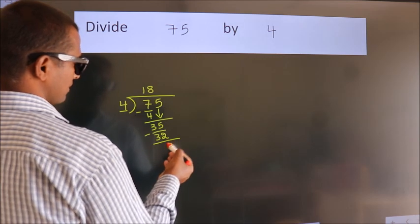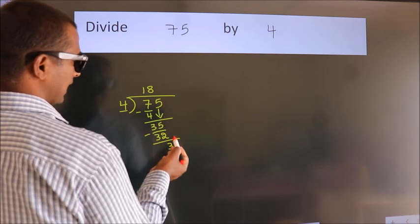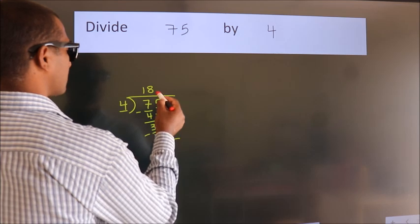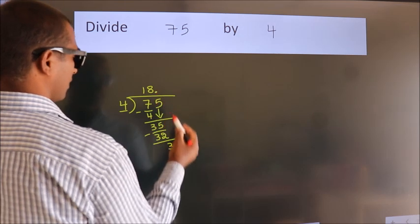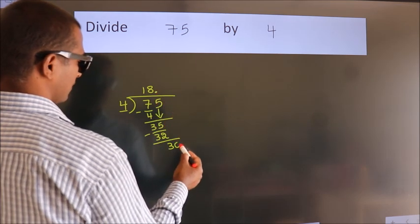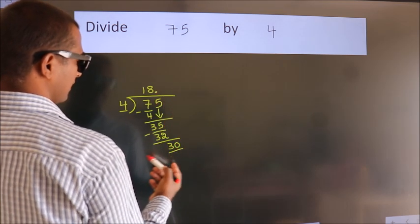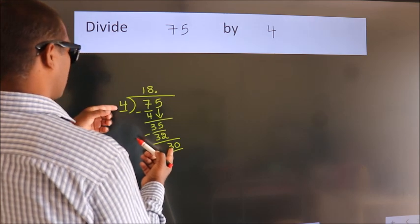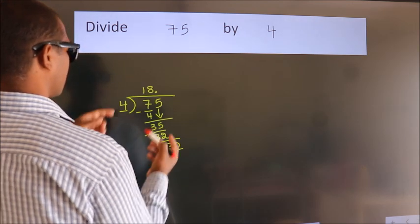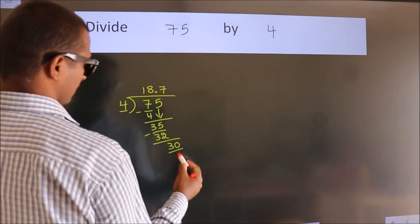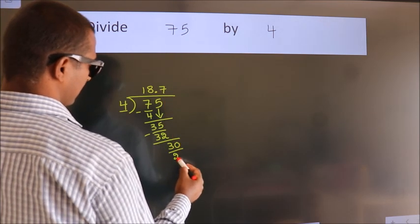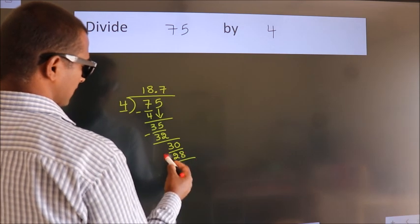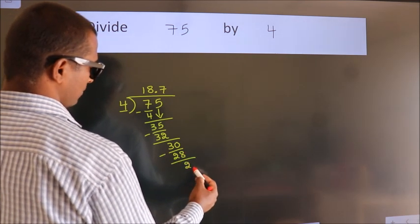After this, no more numbers to bring down. So what we do is, we put a dot and take 0, so 30. A number close to 30 in the 4 table is 4 sevens 28. Now we subtract. We get 2.